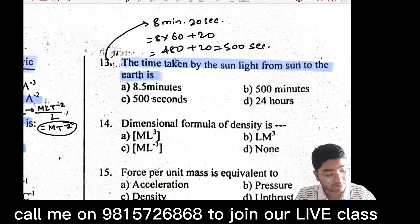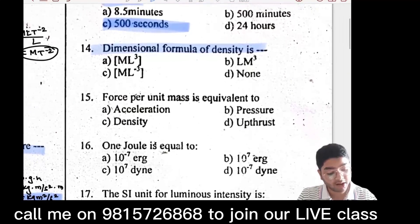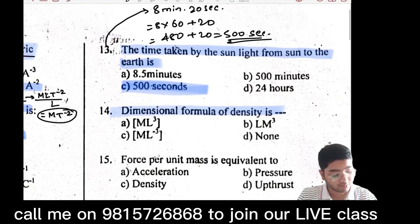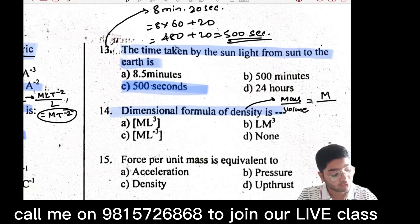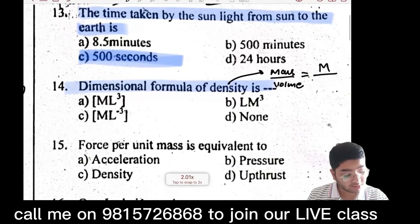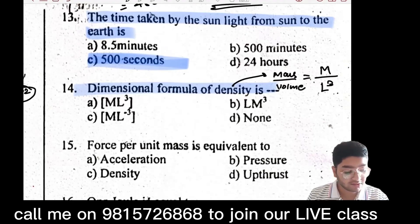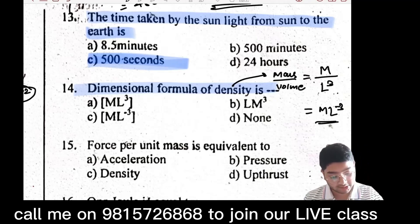The dimensional formula of density: density equals mass upon volume. Mass is M, volume is L³ (meter cube). So the dimensional formula of density is M·L⁻³.